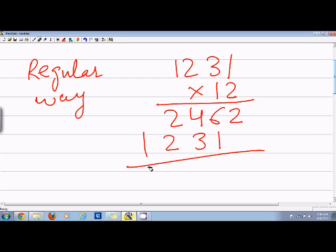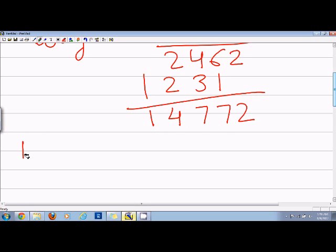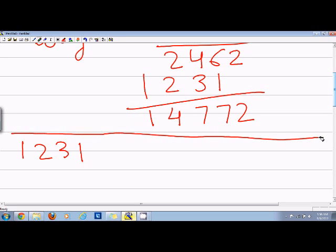And then I will say 1, 4, 7, 7, 2. Now if I look at the problem again, 1231, I will use my own way to multiply it by 12.